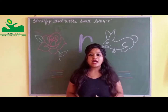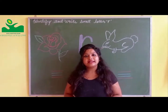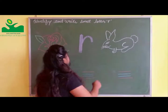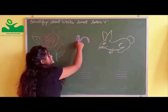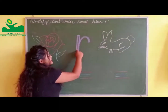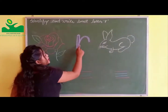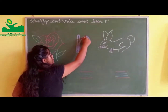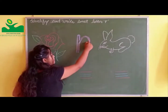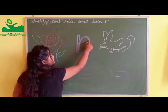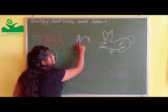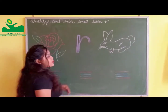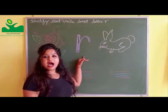Now we will trace small letter R. First we will make a starting line like this. Now from here, we will make the curve. I am going to move half curve to correct. Have you followed me? Small letter R.